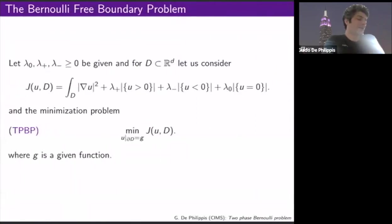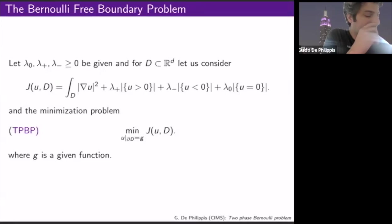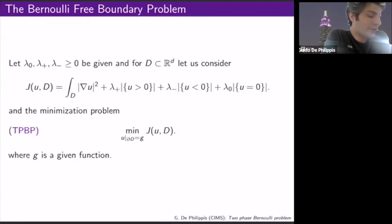Let's start with the problem. The Bernoulli free boundary problem is the following: you are given three constants, lambda zero, lambda plus, and lambda minus, all non-negative. For each subdomain of some space R^d, you consider this functional given by the Dirichlet energy of your function U, and then you penalize, in different ways, the measure where U is positive, negative, or zero.